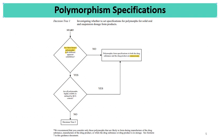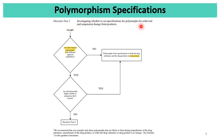Now, regarding the requirement of polymorphic specifications — when they are required and when they are considered unnecessary. Decision Tree 1, referred from the USFDA guideline, investigates whether to set a specification for polymorphs for oral solids and suspension formulations. The first question is: are there known polymorphs with different apparent solubilities? If no, a polymorphic form specification is unnecessary.